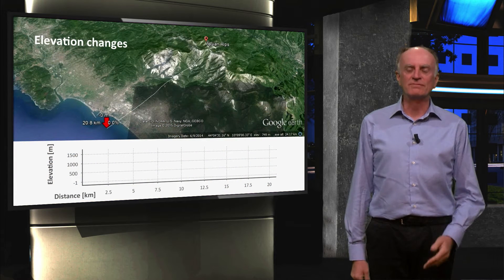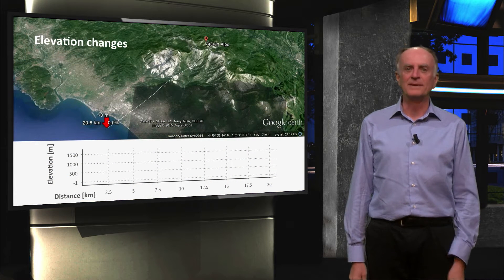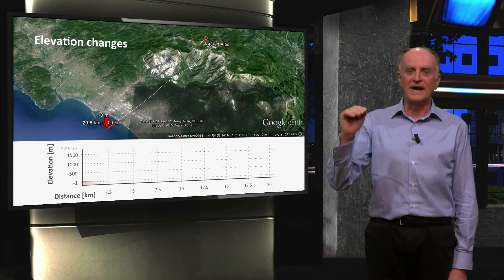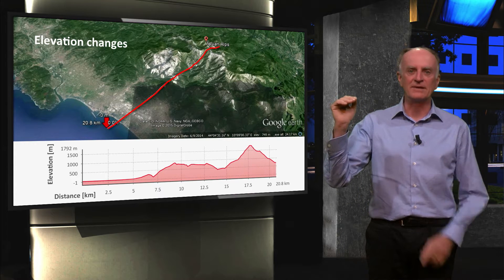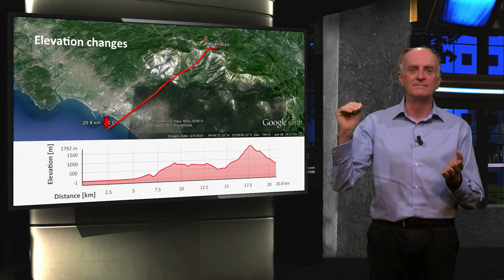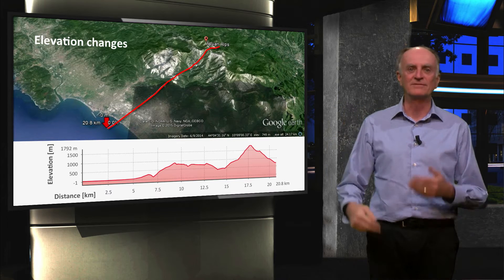Elevations can change over very short distances. In places like the Apuane Alps of Tuscany, peaks higher than 1500 meters are at few kilometers from the sea. Snow in the morning, afternoon on the beach.